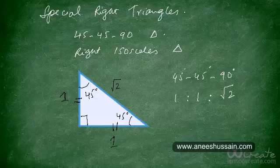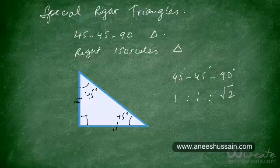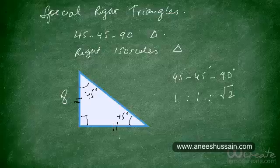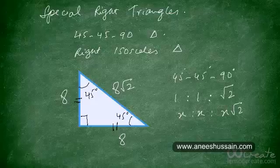Now how do we apply this rule? That's quite simple. If this side has a length of x, then the base will also have a length of x, and the hypotenuse will have a length of x times √2. For example, if this side has a length of 8, then the base will also have a length of 8 and the hypotenuse will have a length of 8√2. Remember, it's always x, x, and x times √2.